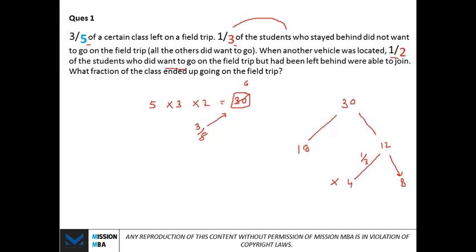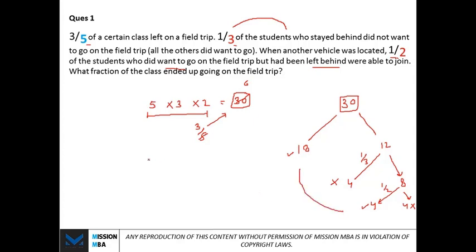So eight of the remaining students wanted to go. When another vehicle was located, half of the students who did want to go but had been left behind were able to join — half of eight is four. Four were able to join, and four were still left behind. So the total who ended up going: eighteen plus four equals twenty-two.